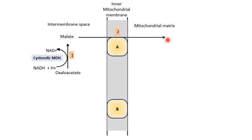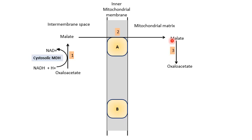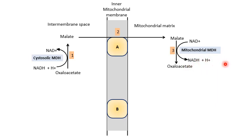The reducing equivalents from the malate will be transferred to the mitochondrial NAD+, leading to the synthesis of oxaloacetate from malate with the help of the mitochondrial malate dehydrogenase enzyme. At the end of this reaction, there is synthesis of NADH, which will enter into the electron transport chain and lead to the synthesis of 2.5 molecules of ATP.